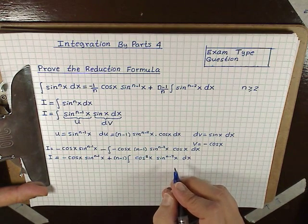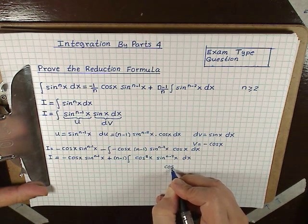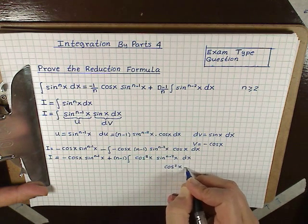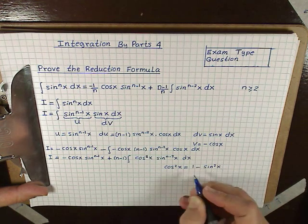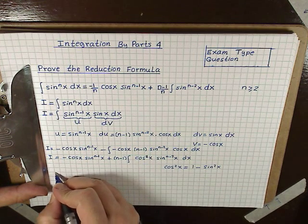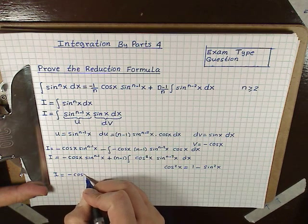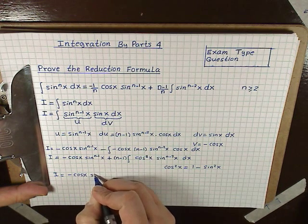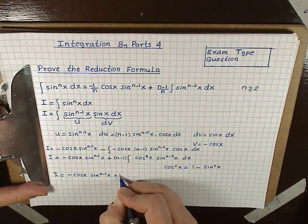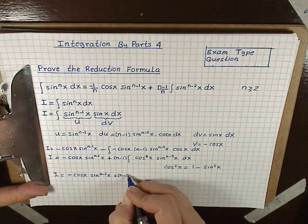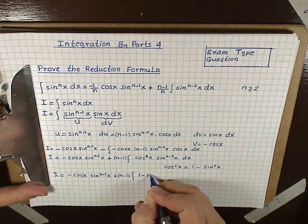Now we're going to use a trig identity and rewrite cos²(x): cos²(x) = 1 - sin²(x). Substituting that in, we get I = -cos(x) sin^(n-1)(x) plus (n-1) times the integral of (1 - sin²(x)) sin^(n-2)(x) dx.